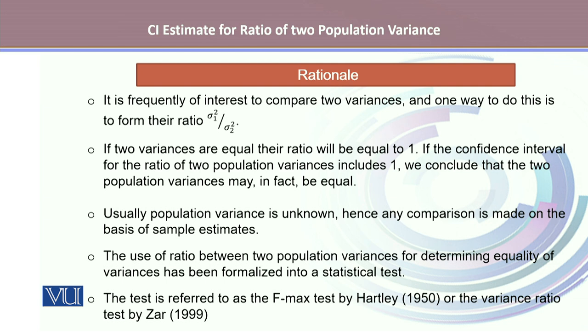If two variances are equal, the ratio will be equal to 1, and if the confidence interval for ratio of two population variances includes 1, we conclude that the two population variances may in fact be equal.